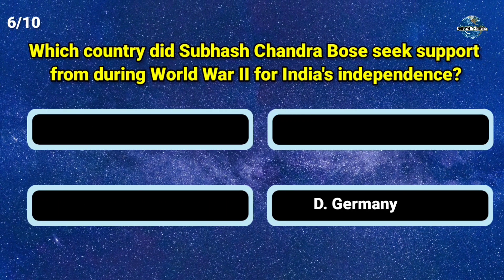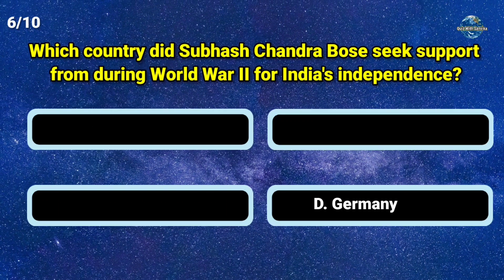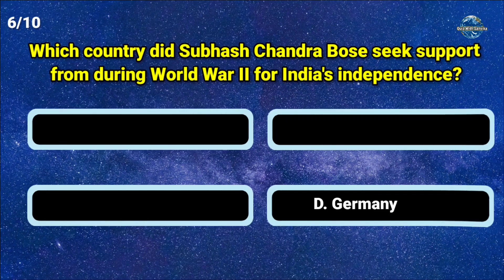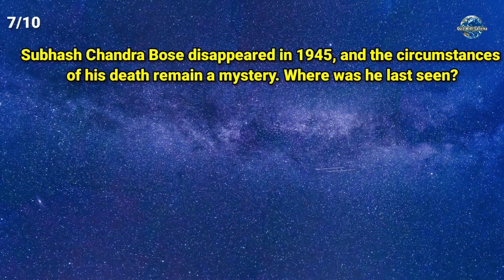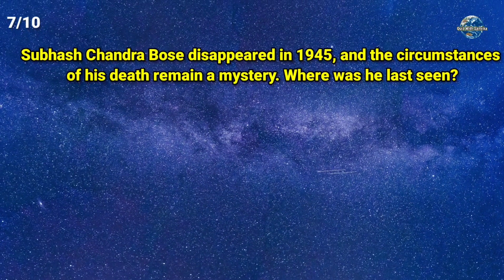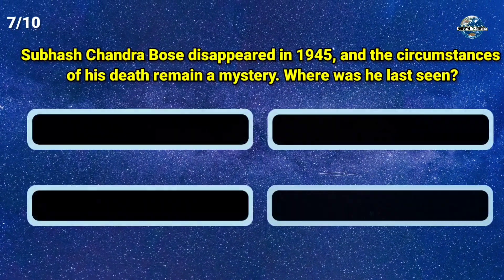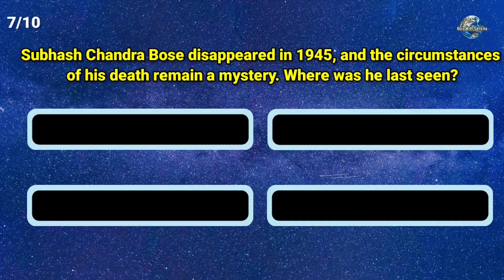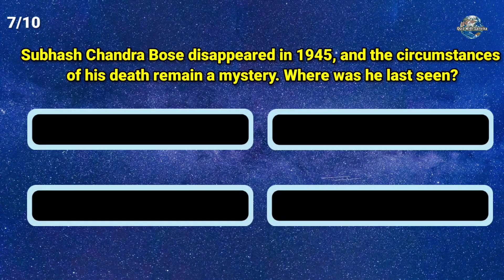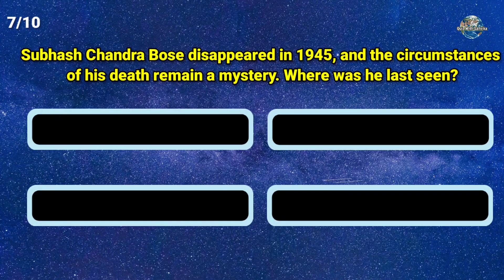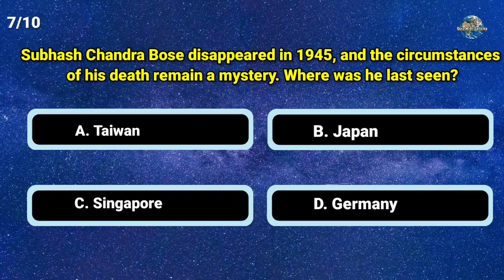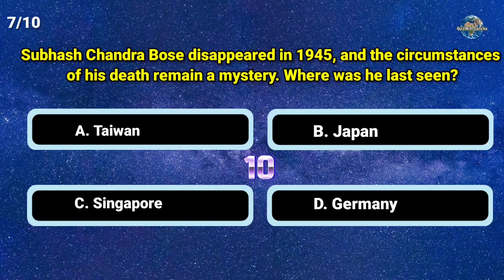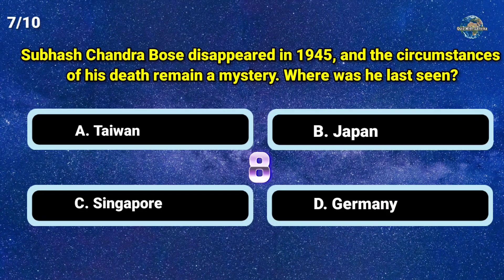Option D, Germany. Subhash Chandra Bose disappeared in 1945 and the circumstances of his death remain a mystery. Where was he last seen?